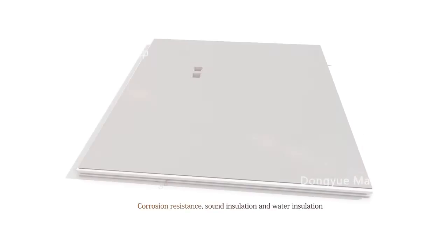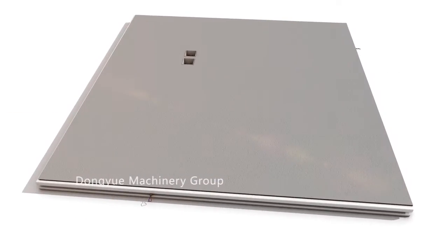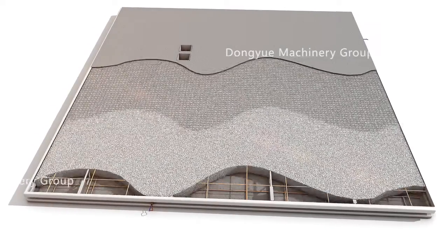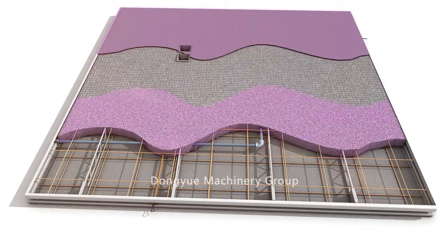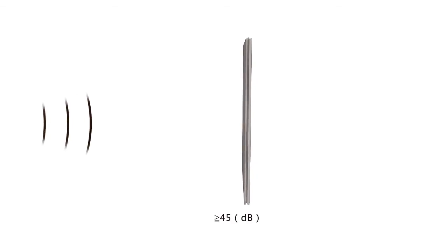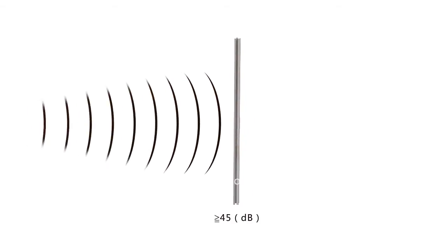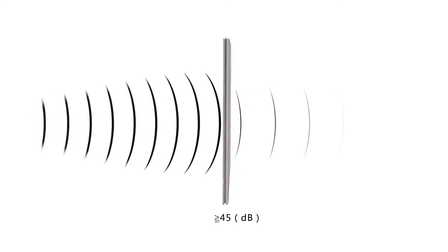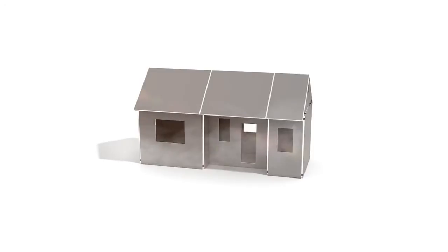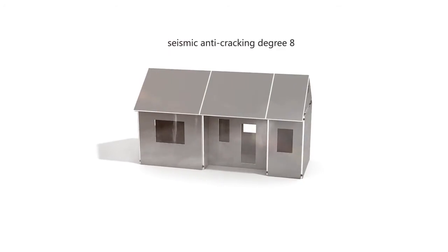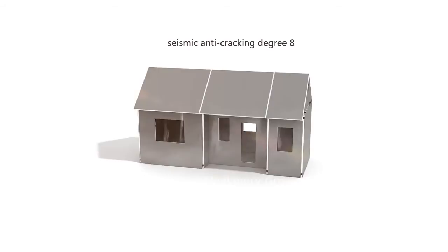Corrosion resistance, sound insulation, and water insulation. The gelling material used is sulfate aluminum cement, so the surface layer and core material have excellent acid and alkali corrosion resistance. The Nanocomposite Panel's sound insulation factor is greater than or equal to 45 decibels. It has passed 2 million times of fatigue vibration testing and is suitable for construction in seismic anti-cracking degree 8 regions.